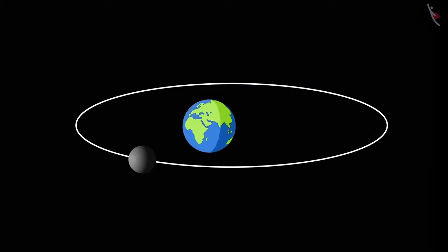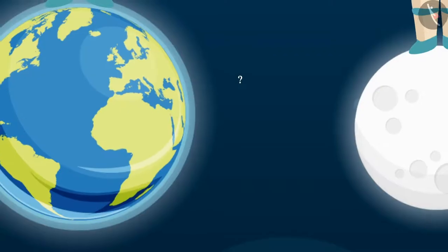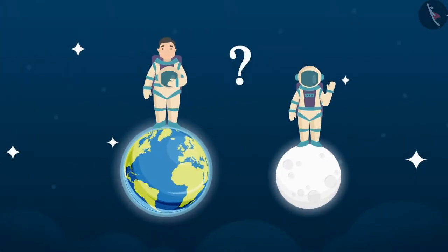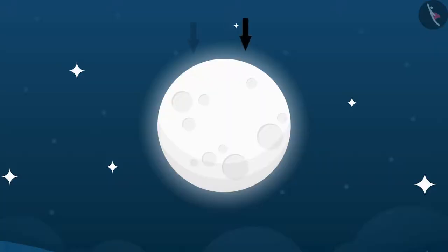Now let's take another example and see how the weight of an object varies on the moon. Will the object be heavier or lighter on the moon compared to when it was on the earth? The weight of an object on the earth is the force with which the earth attracts the object. Similarly, the weight of an object on the moon is the force with which the moon attracts the object. Now let us find out what that force is.